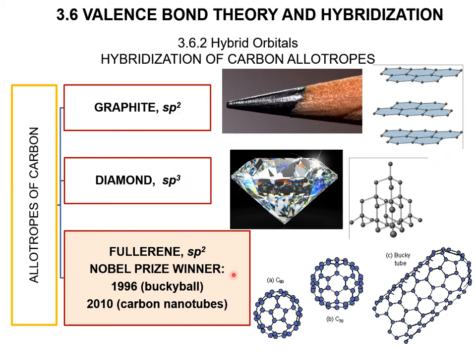The allotrope discovered in the 1990s is fullerene. In 1996, the buckyball was recognized, and carbon nanotubes have also been discovered.